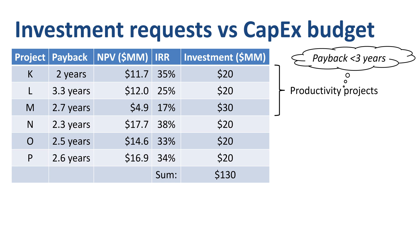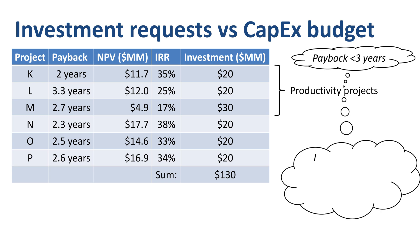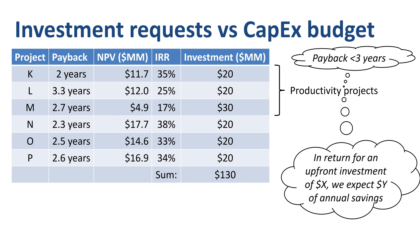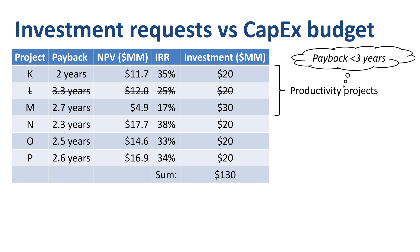Why would you use the payback method for productivity projects? It's because most productivity projects have the same format: in return for an upfront investment of X dollars, we expect Y dollars of annual savings — for example, investing to automate a part of the production process in return for a headcount reduction. Benefits tend to be the same for each year in the project scope, so simply divide X by Y and you have the expected payback period. Using this approach, Project L is eliminated as its payback is longer than three years, even though its NPV and IRR are more attractive than Project M.